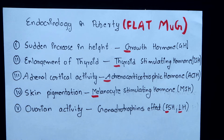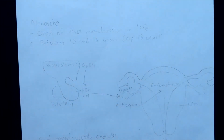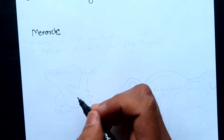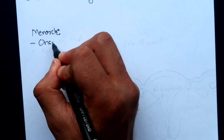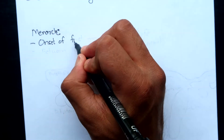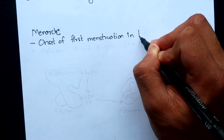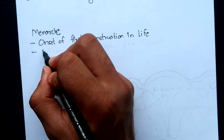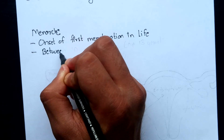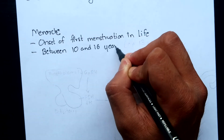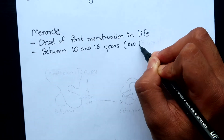Now briefly about menarche. It is the onset of first menstruation in life and may occur anywhere between 10 and 16 years of age, the peak time being 13 years.